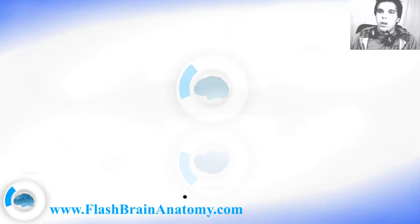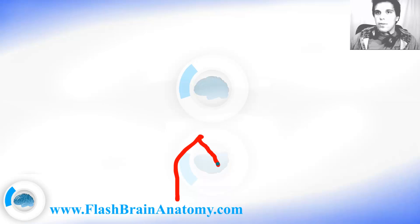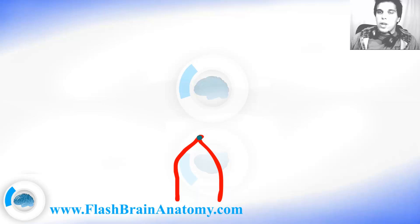So we have the vertebral arteries entering the skull. There are two of these vertebral arteries. This is one vertebral artery and then we have another vertebral artery. When these two vertebral arteries join, they create one artery called the basilar artery.